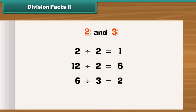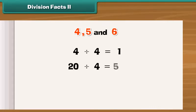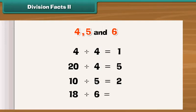Now let us look at the division facts of 4, 5 and 6. 4 divided by 4 is 1. 20 divided by 4 is 5. 10 divided by 5 is 2. Similarly, 18 divided by 6 is 3.